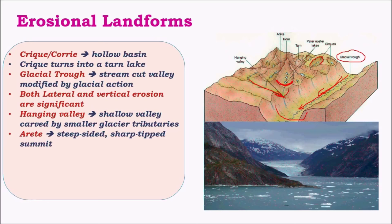An arête is a ridge formed due to erosion on both sides of a peak. As erosion becomes intense on both sides, large amounts of glacial debris are removed, and the central uneroded region remains as a sharp ridge called an arête. When this arête is eroded on multiple sides, it gives rise to a pointed peak structure called a horn.